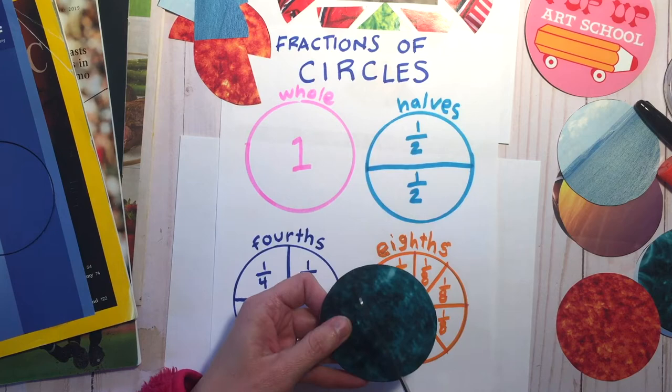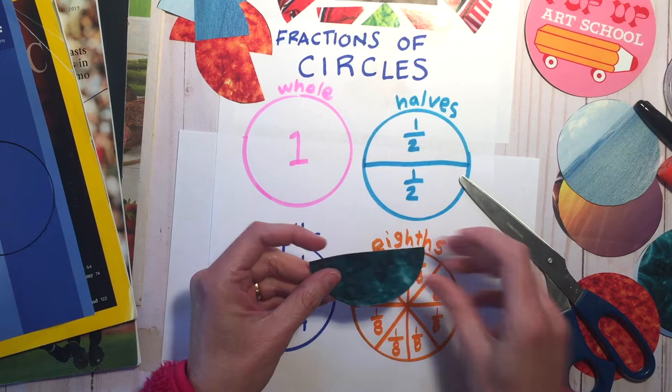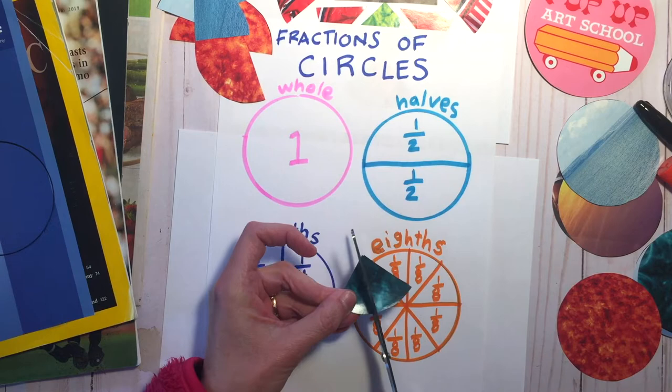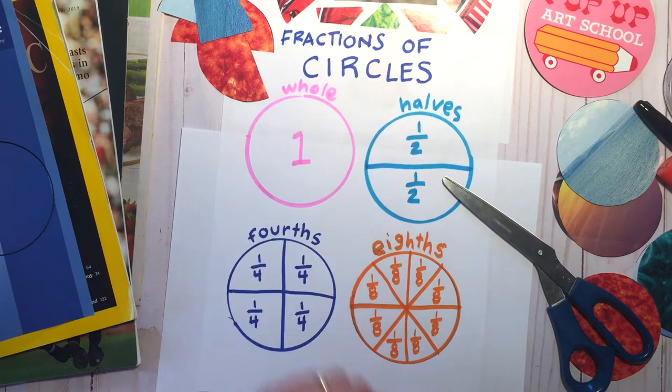Now I'm going to do eighths. Cut in half, place on top of each other. Then cut that in half and that will give you eighths. Put those to the side.